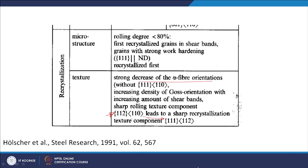So these are the different types of texture which develop due to different types of processing. You can do hot rolling and have certain texture components, or cold rolling — which we also call deformation texture — and after cold rolling you can do recrystallization, which produces recrystallization texture components influenced by those generated during rolling.